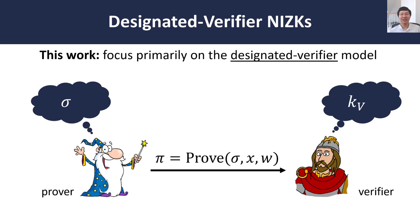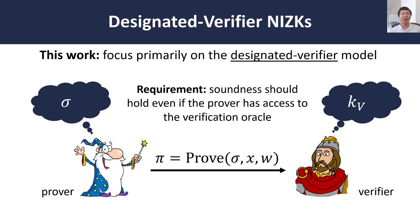Once this one-time setup is complete, the prover can then non-interactively prove arbitrary statements of its choosing to the verifier. And if we are in a designated verifier model, we require that the verification key should be reusable. Namely, the verifier should be able to use the same key to verify arbitrarily many proofs from the prover, and soundness should hold even if the prover is given oracle access to the verification function.